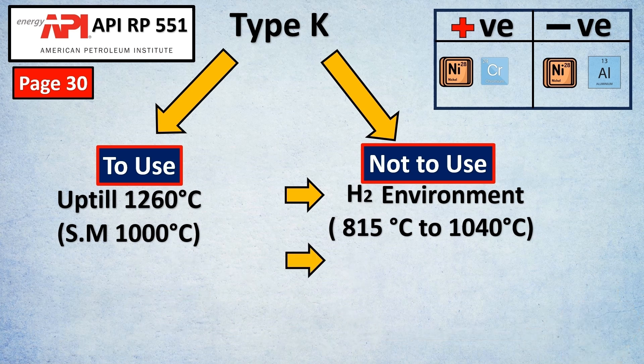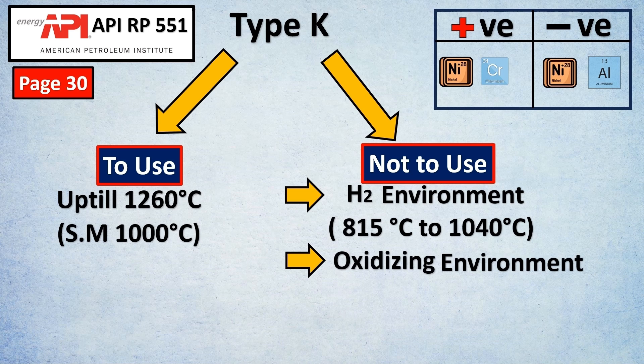In oxidizing environments, it's preferred not to use Type K thermocouples because of the green rot effect.